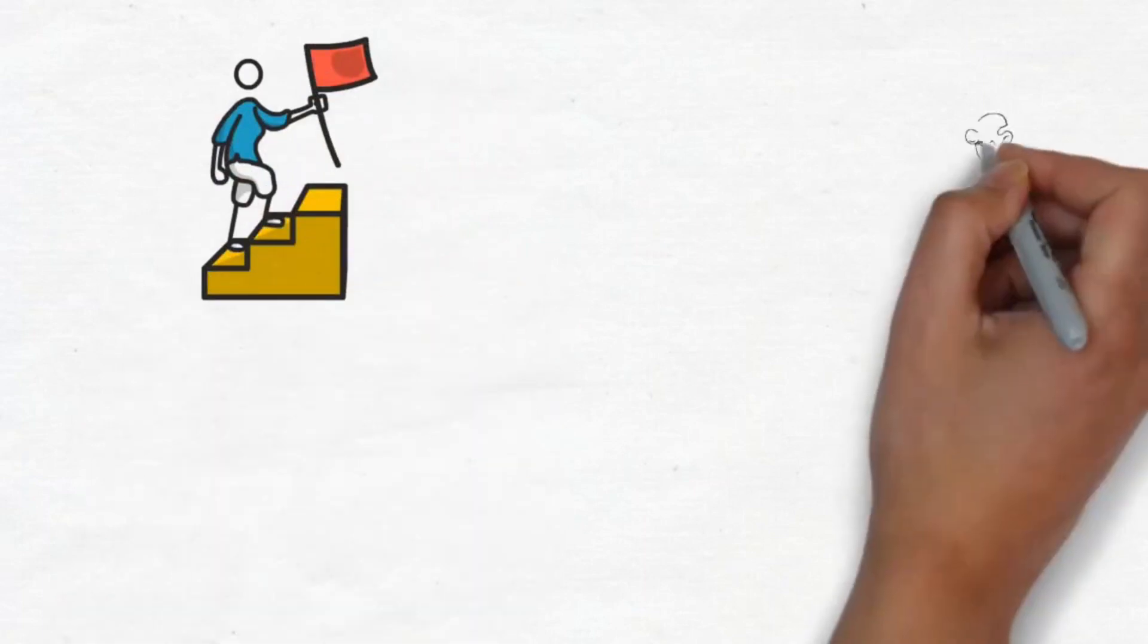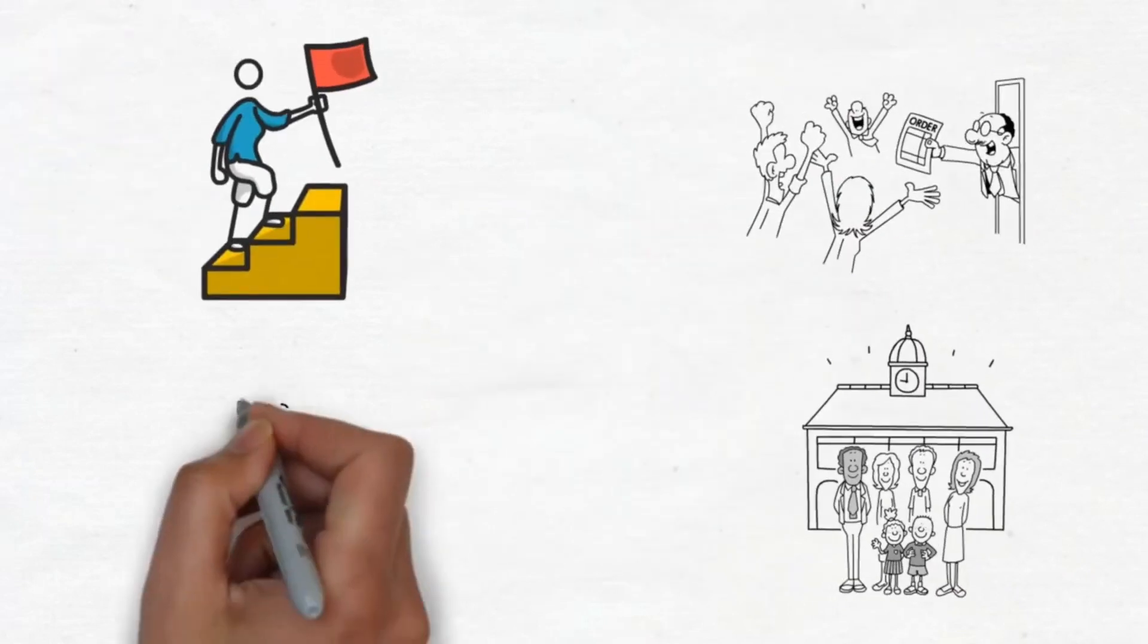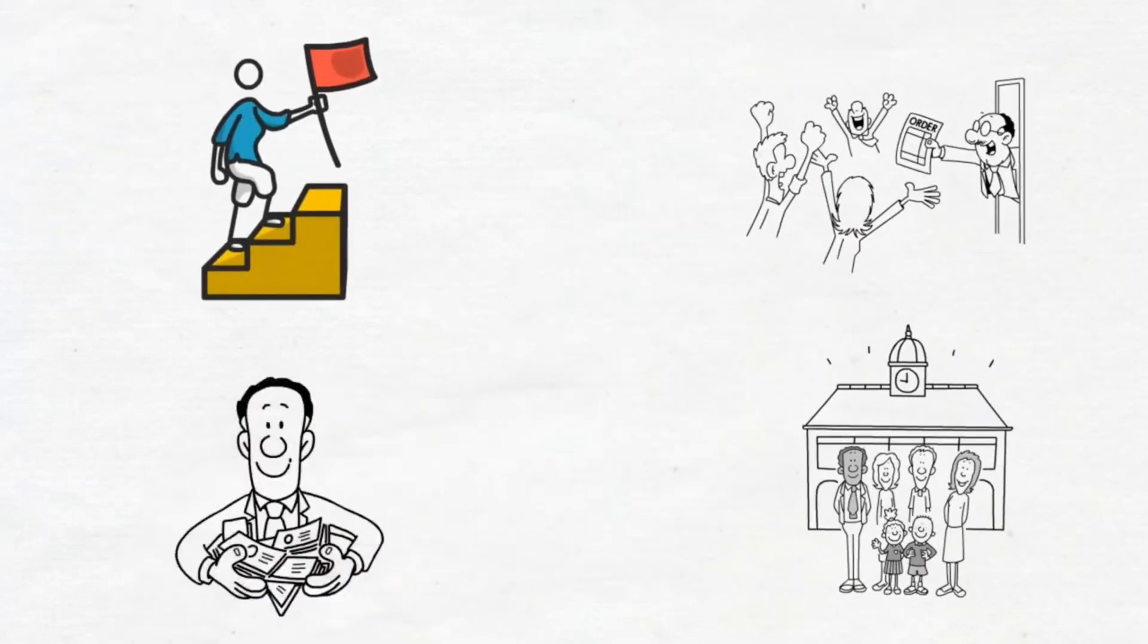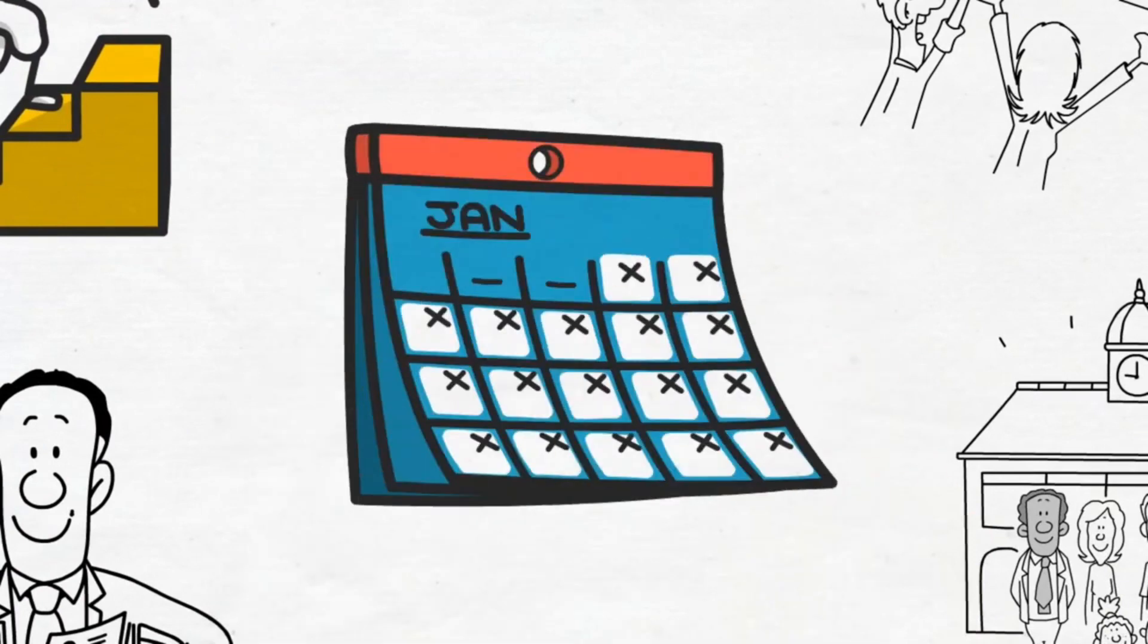For example, you may decide to change occupations, establish a family, or become a billionaire by the age of 35. Then it's time to create an action plan with annual goals to get your to-do list completed.